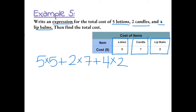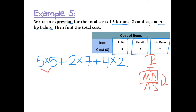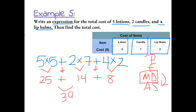Now we can simplify using order of operations. Order of operations tells us we must do any multiplication or division before addition or subtraction. First, let's simplify all our multiplication: five times five gives us twenty-five, two times seven gives us fourteen, and four times two gives us eight. Now we can add: twenty-five plus fourteen gives us thirty-nine, and thirty-nine plus eight gives us a total cost of forty-seven dollars.